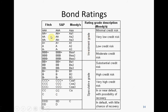For AAA bonds, these are investment grade bonds. You can put your money there for long-term investment, for value investment like Warren Buffett. For lower-rated bonds, you can only invest short term — you want to buy at a lower price and sell at a higher price. This is called speculation, so these are speculative grade bonds.